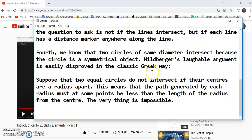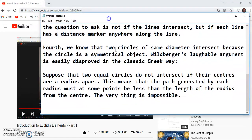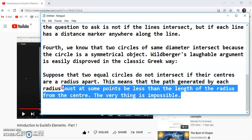So fourth, we do know that two circles of the same diameter intersect because the circle is a symmetrical object. Wilberger's laughable argument is easily disproved in the classic Greek way. Now, it takes a genius like me to tell you something like this because chances are you are too stupid to think of it. And in the spirit of my ancestors, here is the simple proof.